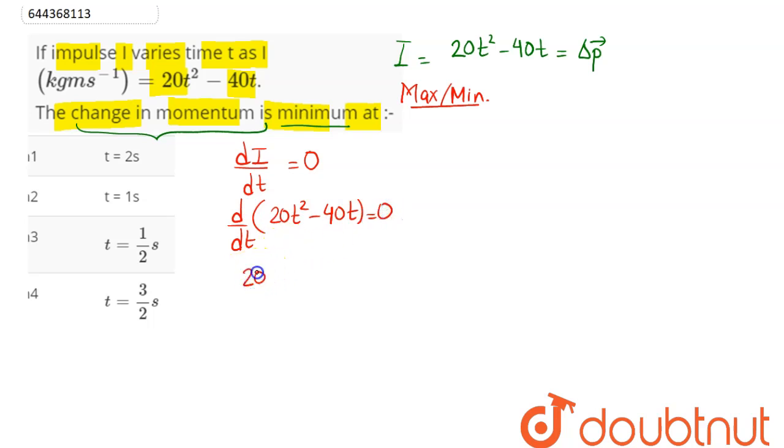So this comes as 20 × 2t - 40 × 1 = 0, which gives 40t = 40. So we can say t = 1 second.